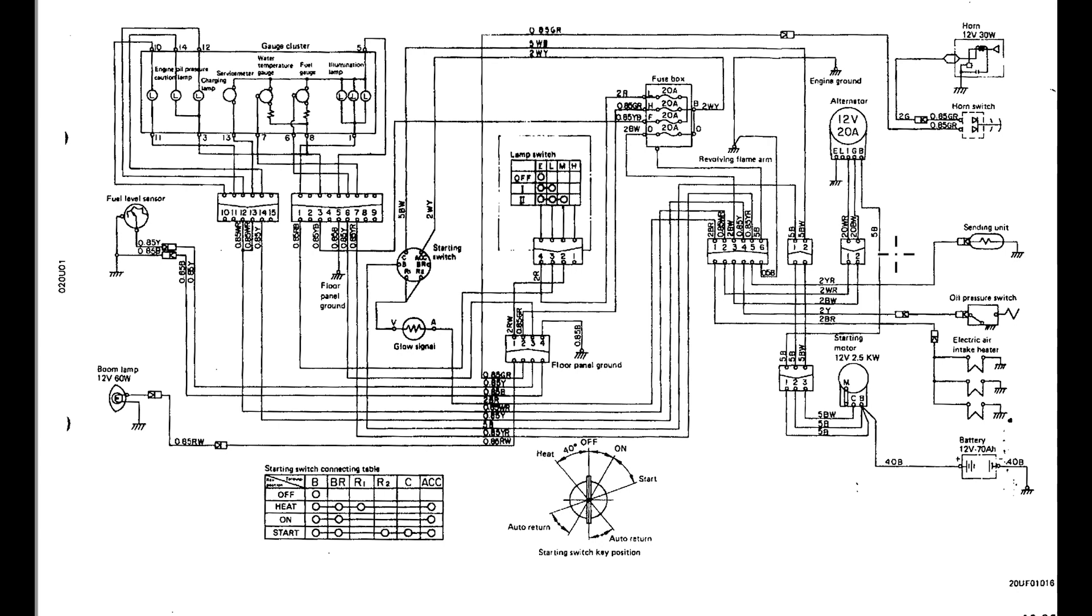If we come up here, 5B. So 5, size of the wire, B, be it black insulation, goes to another component. This shows it's a 12 volt, 20 amp, and it states that it's an alternator. Again, we have harness connectors again. Makes it really convenient to work on machines.